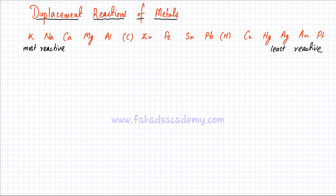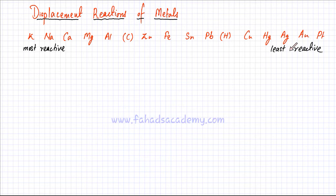The reactivity series goes from the most reactive to the least reactive. You have K, Na — Group 1 metals are the most reactive ones, at the top of the reactivity series. Then you have Group 2, which are less reactive, then Group 3, and then the transition metals. Reactivity decreases, so silver, gold, platinum, and mercury are very unreactive.